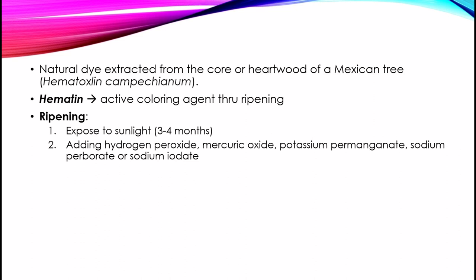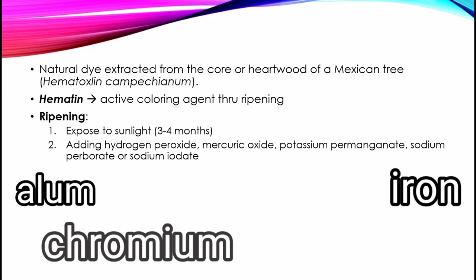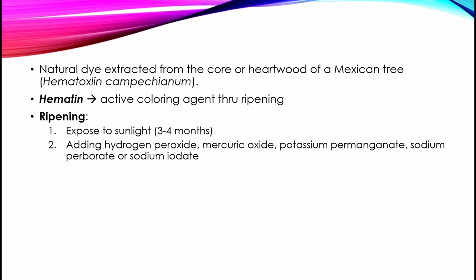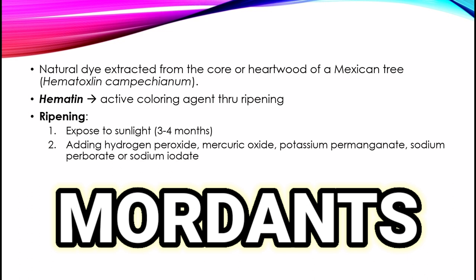Using the least amount of oxidant will result in satisfactory staining and longer life of the stain. Ripened hematoxylene is seldom used alone due to its inherent low affinity for the tissue itself. It is most frequently used in combination with alum, iron, chromium, and copper salts, which act as mordants, catalyzing or forming links between the hematin stain and the tissue. Mordants are substances which combine with the tissue and the staining solution, forming a bridge that allows the staining reaction to take place. Without mordants, no staining could occur.